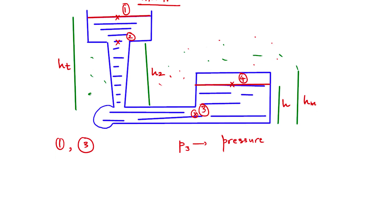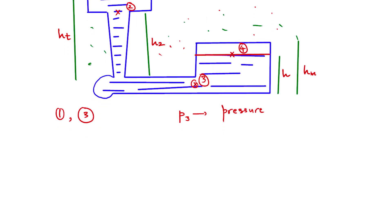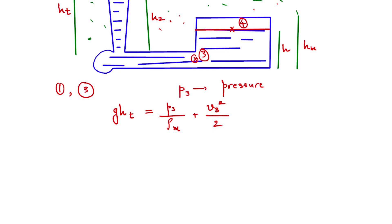When you apply Bernoulli's equation — you can refer back to the previous lecture for fundamentals — what we get is: G·H_T equals P3 divided by the density of the metal, plus V3 squared divided by two. This is the kinetic energy term. Bernoulli's equation is an energy equation equating potential energy and total energy, which includes the kinetic energy term and the potential energy term.